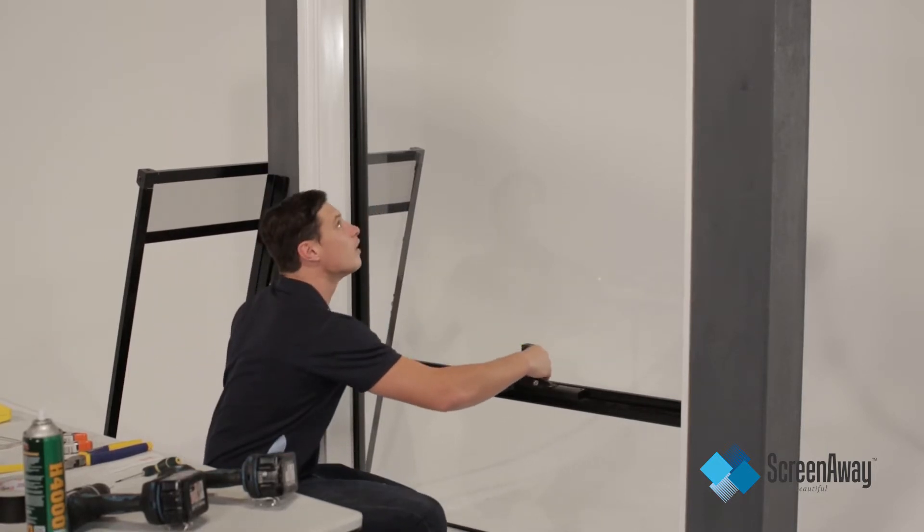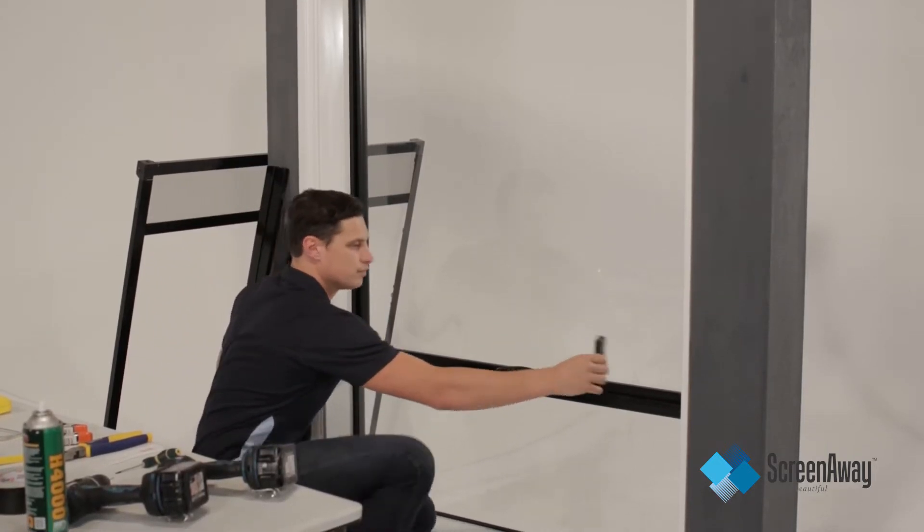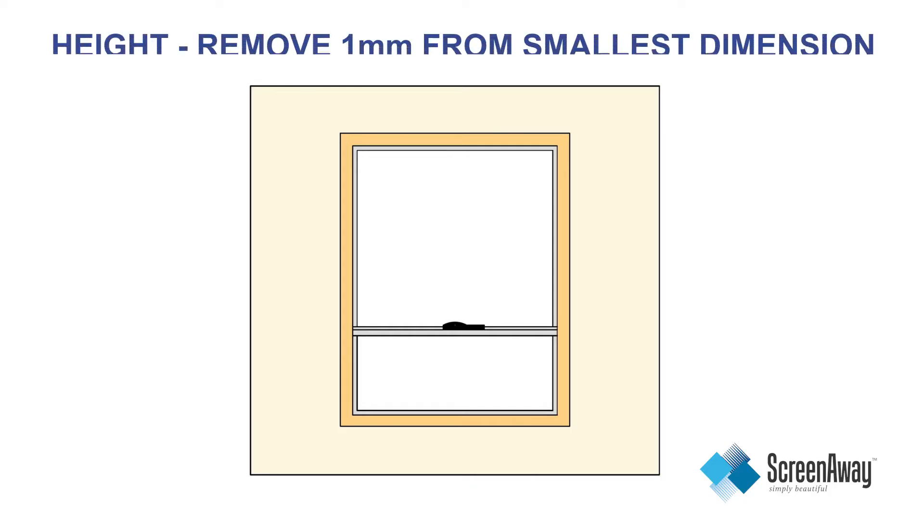For height, measure from the top of the screen track to the top of the reveal. Deduct one millimetre from the smallest measurement to get your final recordable height measurement.